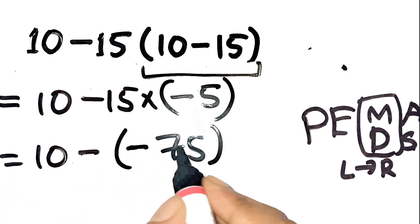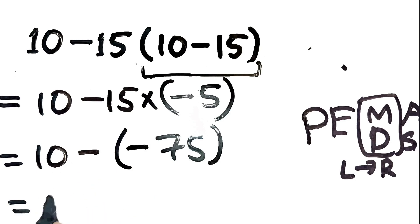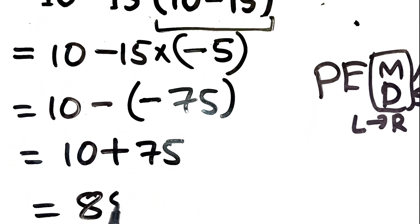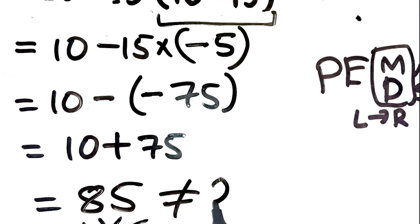Subtracting a negative is the same as adding a positive. So 10 minus negative 75 equals 10 plus 75, which is 85. So the correct answer is 85, not 25.